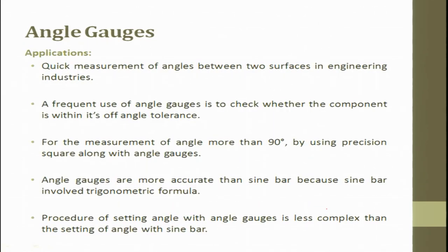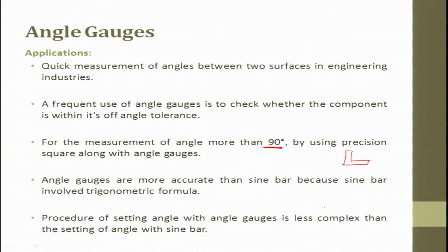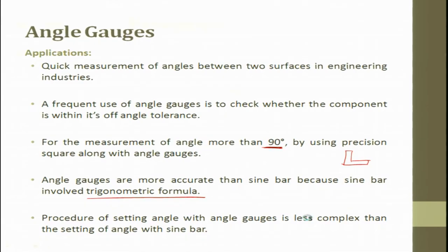Application: angle gauges provide quick measurement of angle between two surfaces in engineering industry. A frequent use is to check whether a component is within its angular tolerance. For measurement of an angle more than 90 degrees, precision squares are used along with the angle gauges. Angles gauges are more accurate than sine bars because sine bar involves a trigonometric formula, and the procedure for setting angles with angle gauges is less complex.